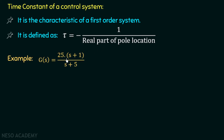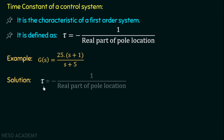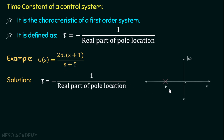Let's understand this with an example. Given G(s) = 25(s+1)/(s+5), determine the time constant. The time constant tau equals negative 1 over the real part of the pole location. In this case, we have a pole at s = -5, which we can plot on the pole-zero diagram.